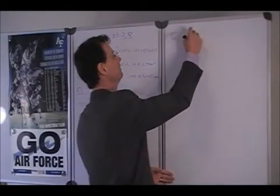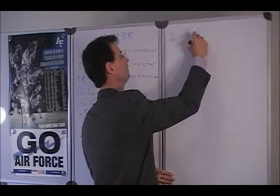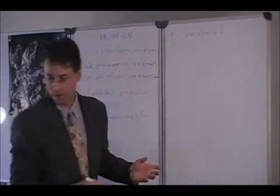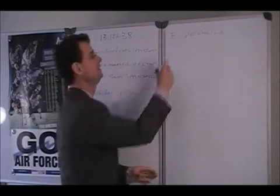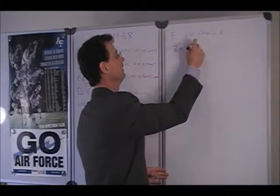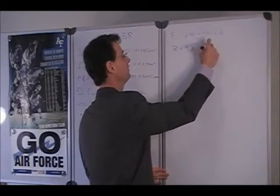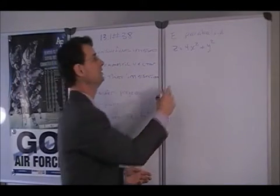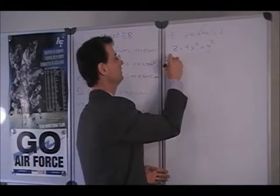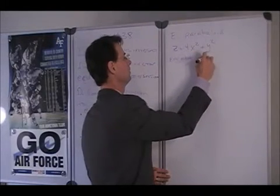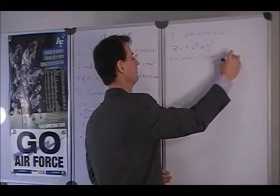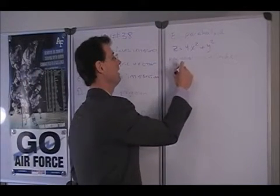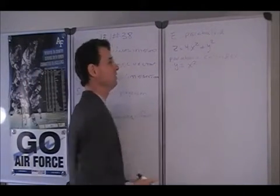We have a paraboloid and the paraboloid is given by z is equal to 4x squared plus y squared. And the paraboloid intersects the parabolic cylinder, and the parabolic cylinder is given by y is equal to x squared.